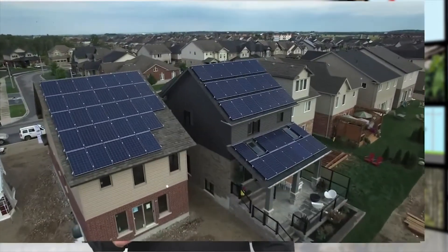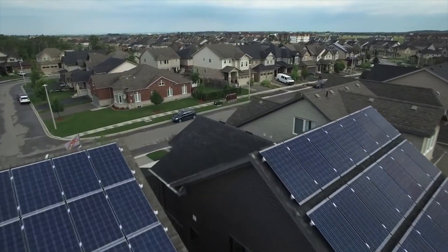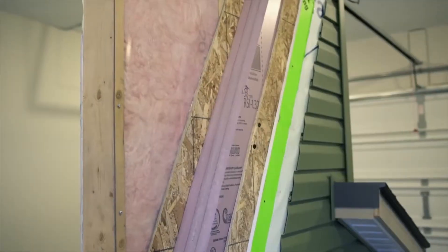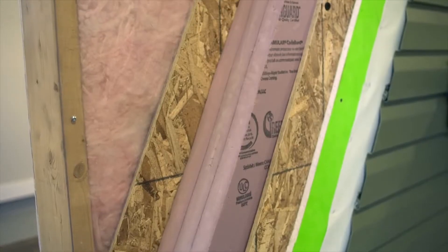Here are some of the features that could be included in a net-zero energy home. Photovoltaic solar panels that convert sunlight to electricity. Airtight construction to prevent heat loss and reduce drafts.